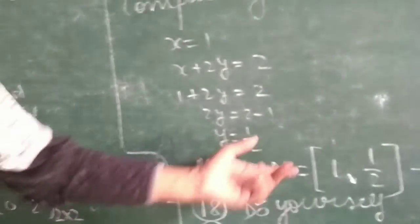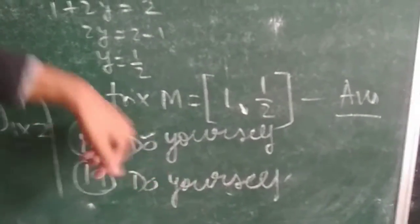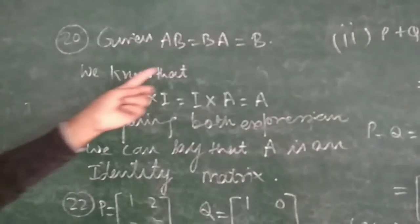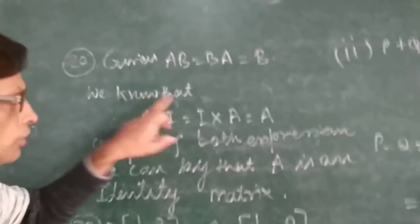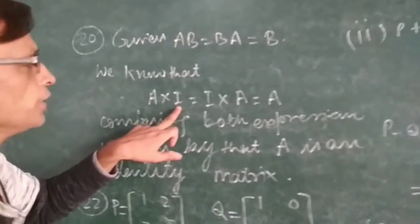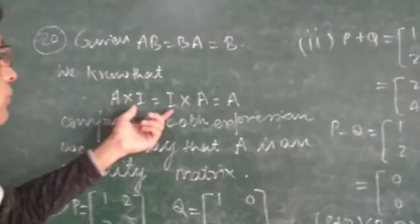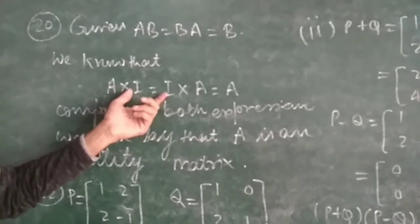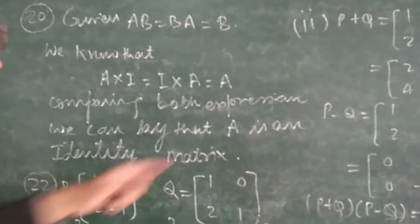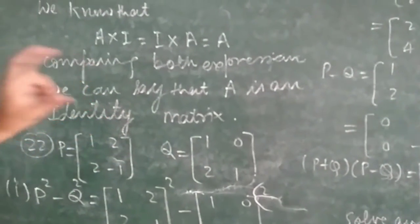Because in this question M was unknown, in this way we can find the value of M as [1, 1/2]. Now 18 and 19 you have to do yourself — they are from the same type. This one is given that the matrix satisfies the identity property. We know the property of identity: A into I equals I into A equals A. Comparing this property to the given expression, we can say that A is an identity matrix. So this is the answer.